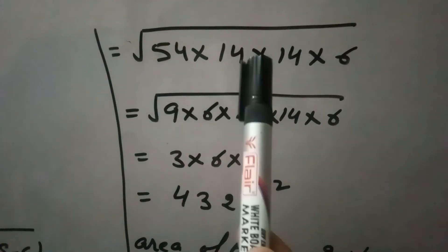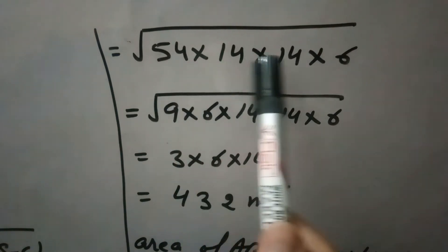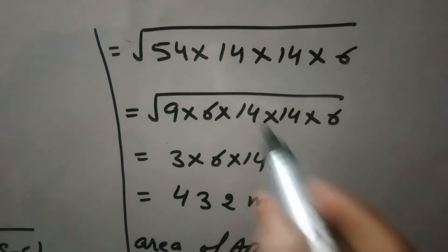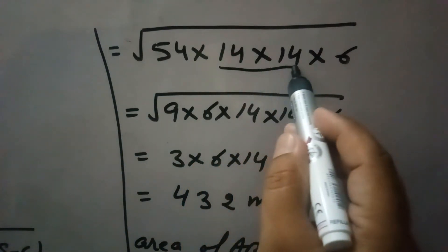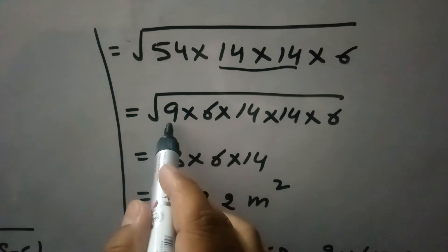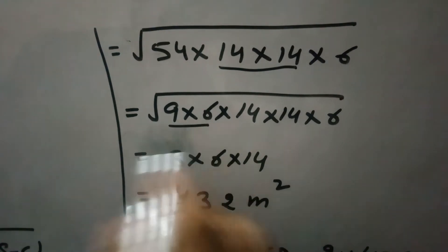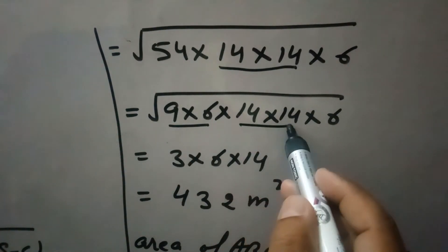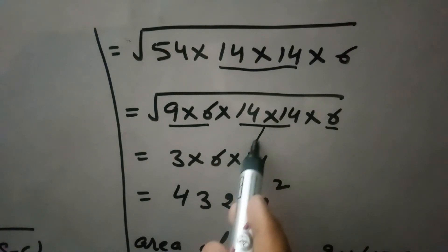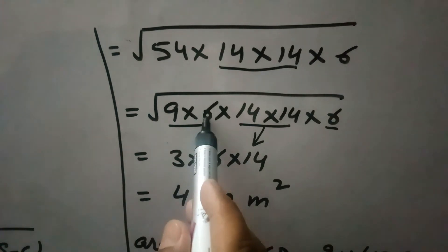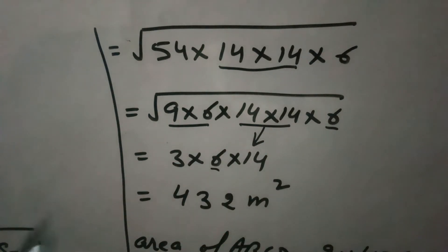Now we have 54 times 14 times 14 times 6. Because these terms are in square root, we can simplify: 54 is 9 times 6, and we have 14 times 14, then 6. The 14 will come out because it appears two times, 6 will come once, and 9 is the square of 3. By multiplying we get the area of the triangle is 432.